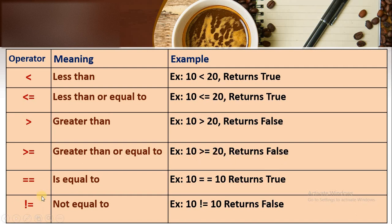These next two are very important and are also called equality operators. The double equals symbol (==) is called the 'is equal to' operator — we need to write the symbol twice. If we write it only once, that is the assignment operator, which we will discuss in coming videos. For example, 10 == 10 returns true because this expression is true.